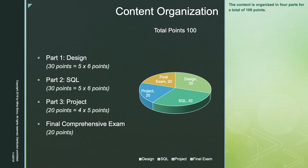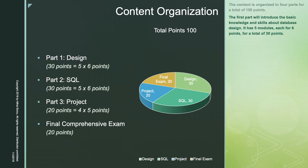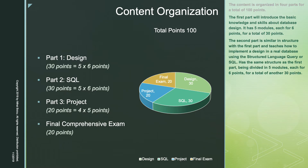The content is organized in four parts for a total of 100 points. The first part introduces the basic knowledge and skills about database design. It has five modules, each for six points, for a total of 30 points. The second part is similar in structure and teaches how to implement a design in a real database using the Structured Query Language, or SQL. It is also divided into five modules, each for six points, for a total of another 30 points.